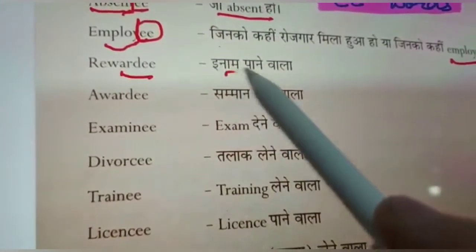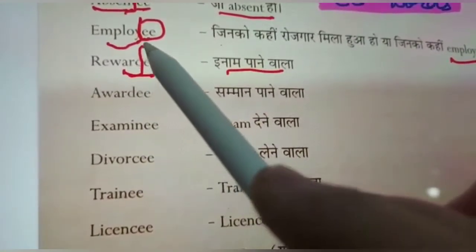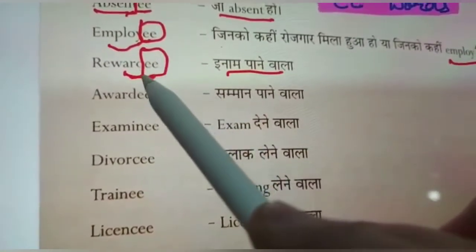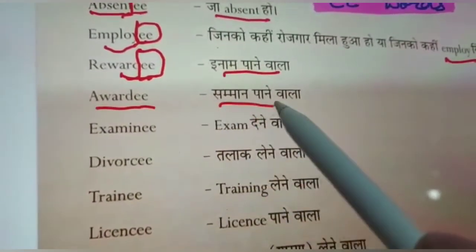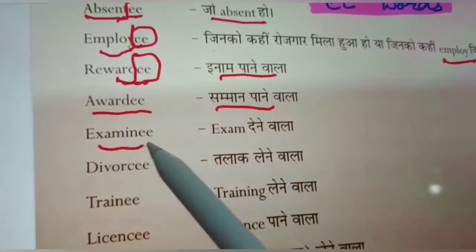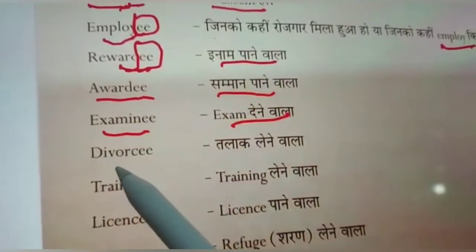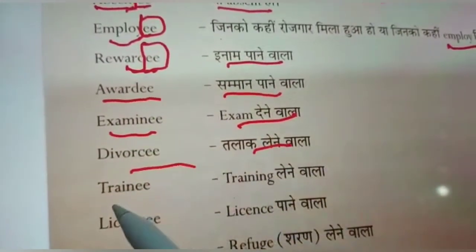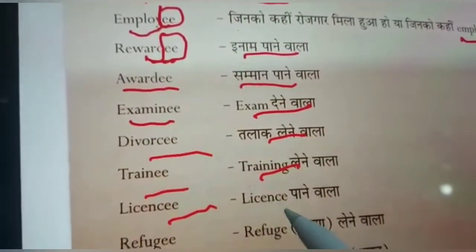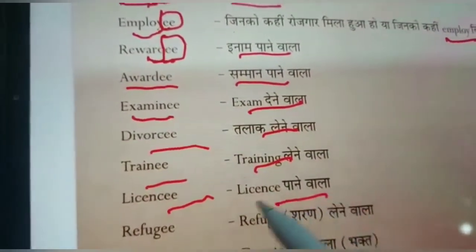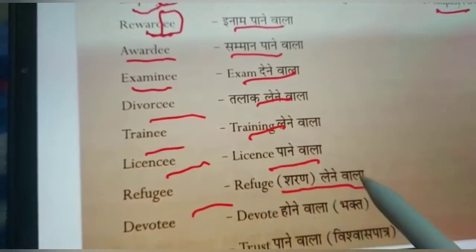Rewardee — 'reward' is a different word, so you can add a double E. Examinee, Divorcee, Trainee, Licensee, Refugee — one who takes refuge or shelter, Devotee — one who devotes or a bhakt.